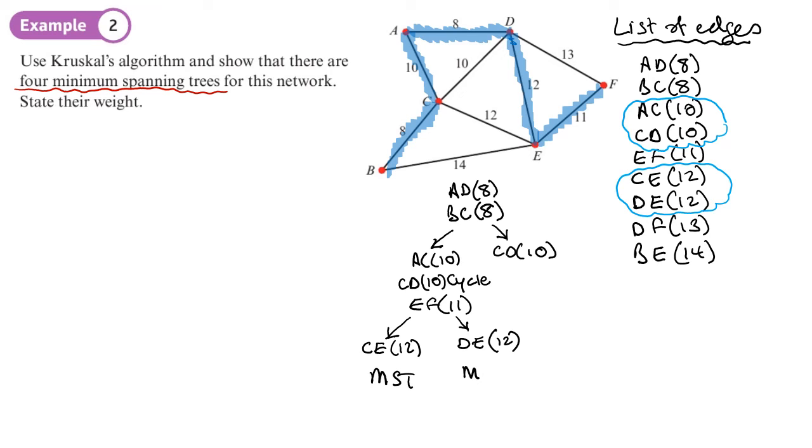Let's write down what the weights of those are. To find the weight, obviously, we just add the edges altogether. So weight equals, what have we got? We've got 8 plus 8, 16, plus 10, that's 26, plus 11, plus 12. So we get a weight of 49 on both of these.